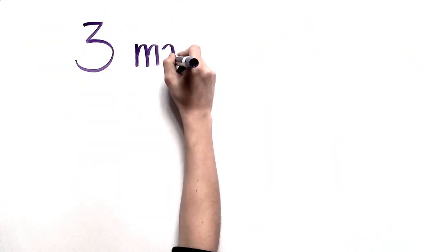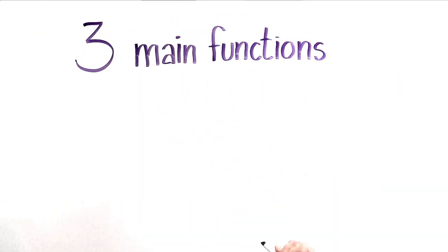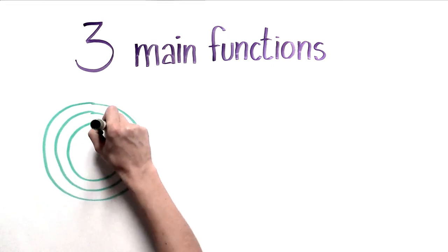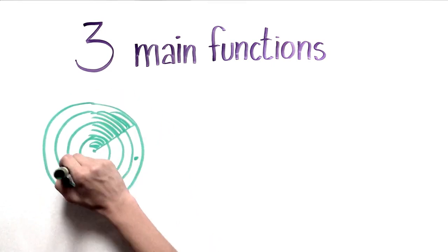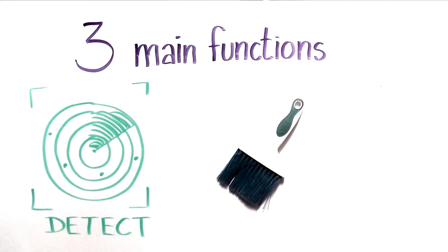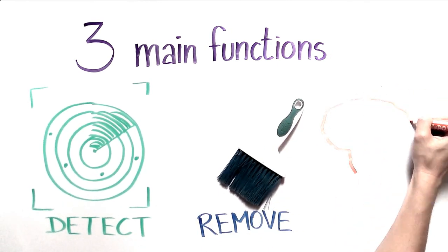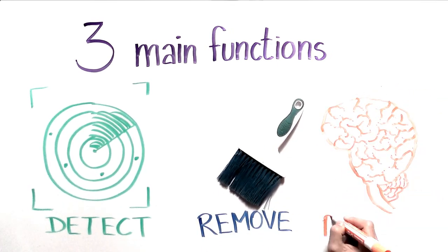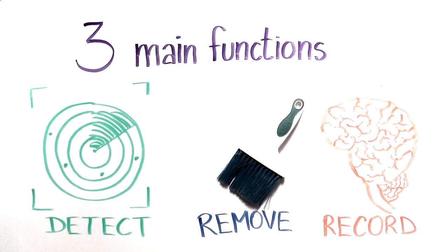The immune system has three main functions. First, it detects unrecognizable or abnormal material like those pathogens, viruses, bacteria, etc. Second, it attempts to kill or destroy the pathogens. And third, it keeps a memory of the pathogen in case it tries to invade again.